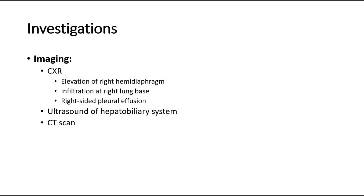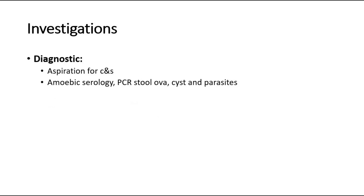Ultrasound of the hepatobiliary system and CT scan are both used to exclude liver tumour. The definitive diagnostic investigation is aspiration of the pus for culture and sensitivity to determine the causative organism. Additional tests such as amoebic serology or PCR stool for ova, cysts, and parasites can be done if amoebic abscess is suspected.